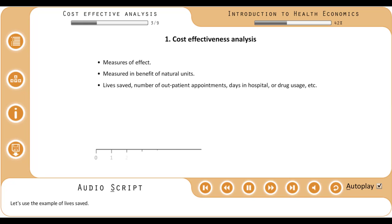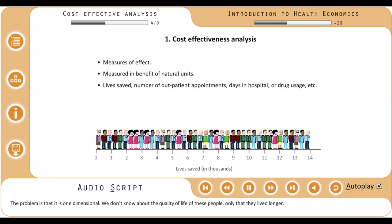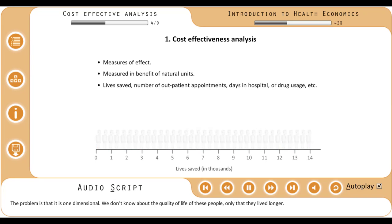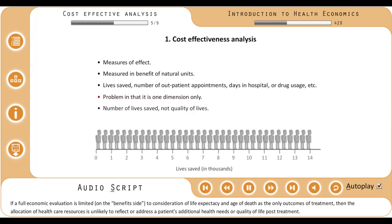Let's use the example of lives saved. The problem is that it is one-dimensional — we don't know about the quality of life of these people, only that they lived longer. If a full economic evaluation is limited on the benefits side to consideration of life expectancy and age of death as the only outcomes of treatment, then the allocation of healthcare resources is unlikely to reflect or address a patient's additional health needs or quality of life post-treatment.